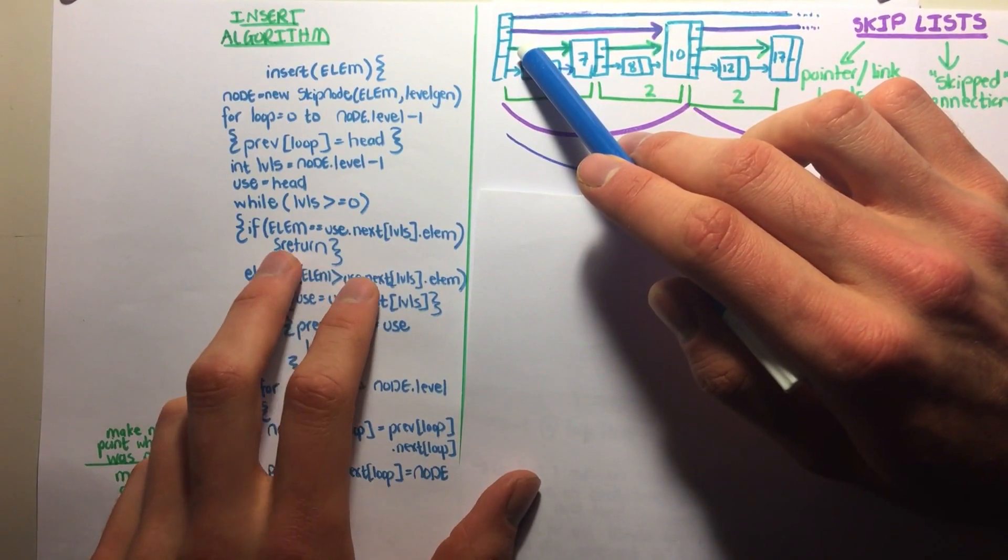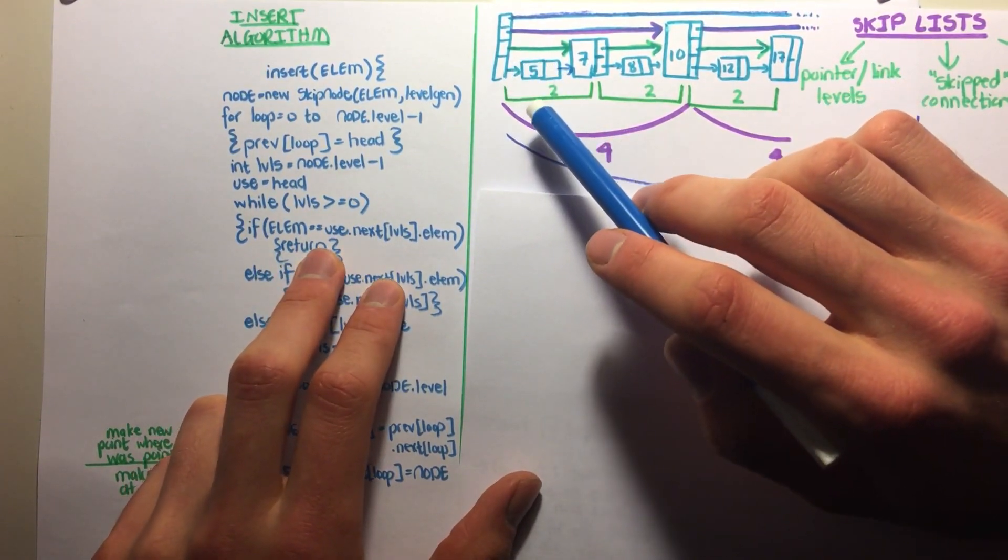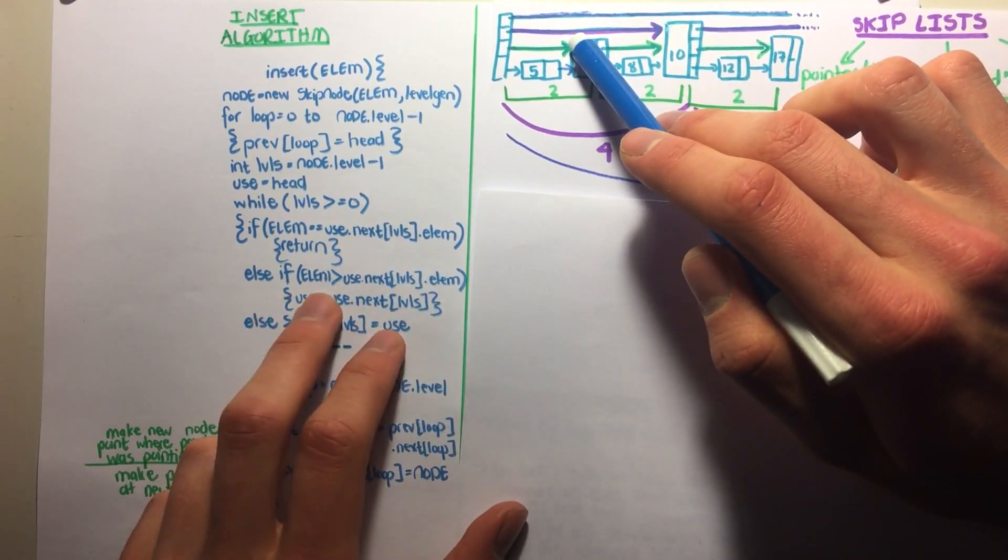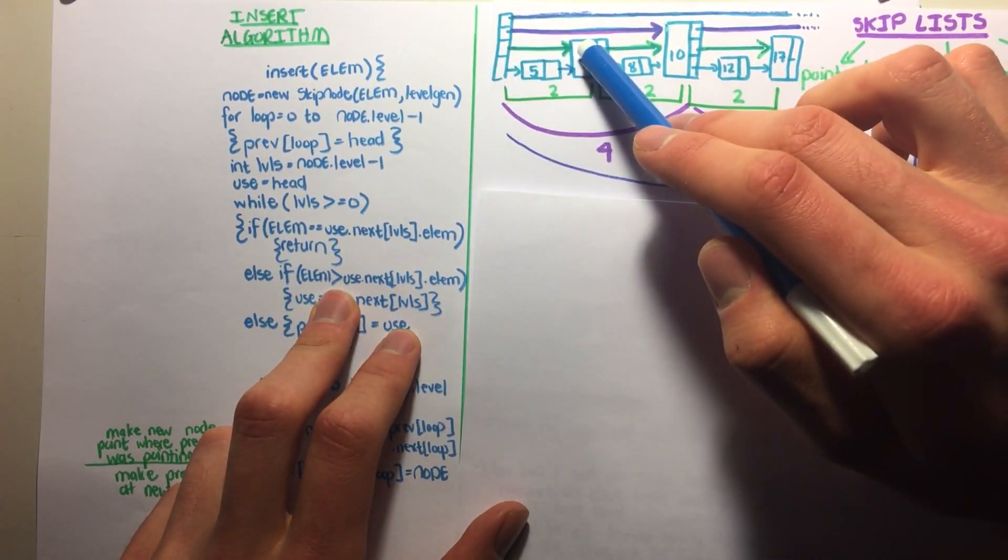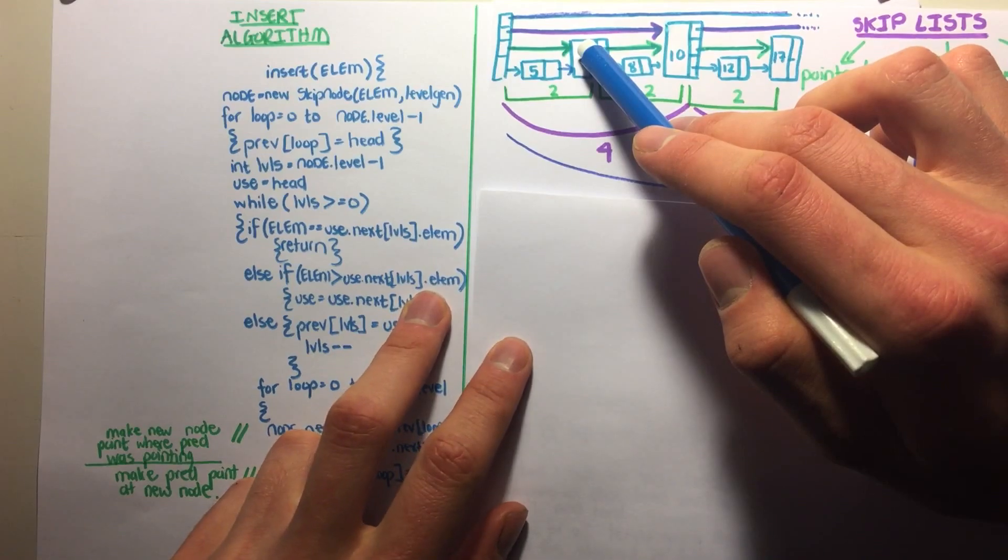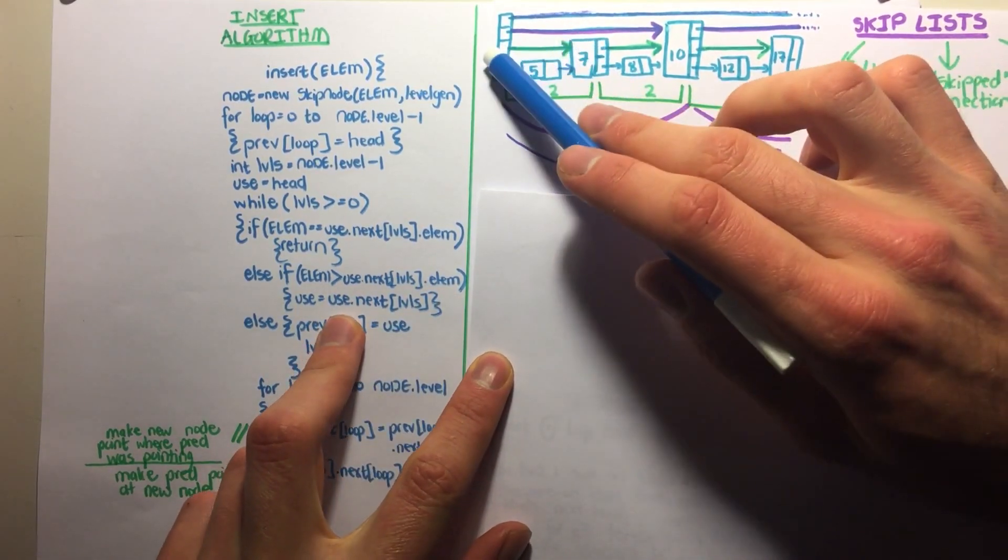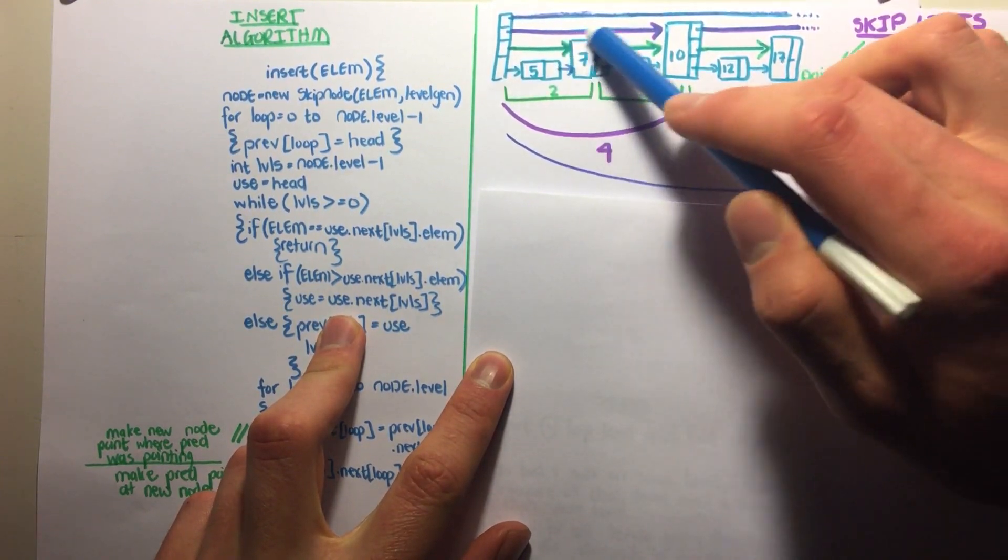Levels are still bigger than 0. If element number 9 is equal to 7, no, it's not. Else if element is greater than, which it is, use dot next levels, then we say use is assigned use dot next. Now use is number 7.